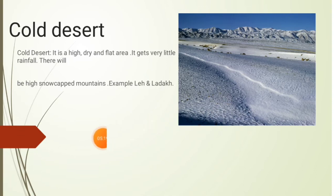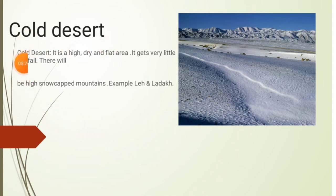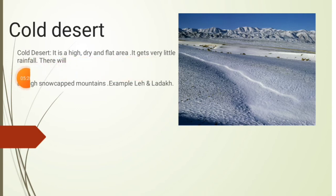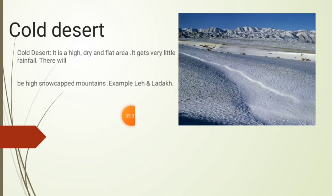After Manali, he reached the cold desert. A cold desert is a high, dry, and flat area that gets very little rainfall. There are high snow-capped mountains, and the example of a cold desert is Leh and Ladakh.